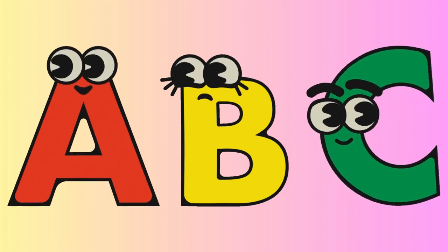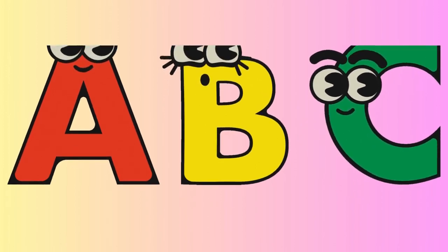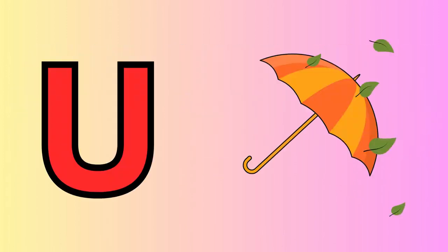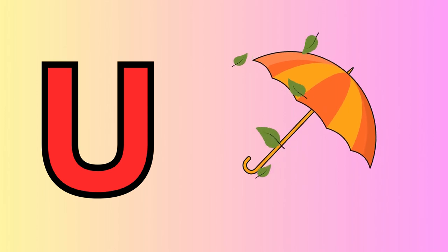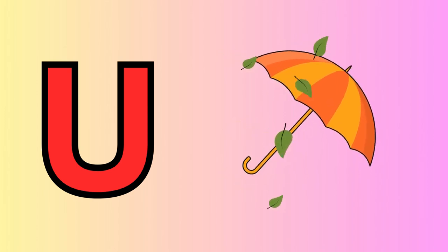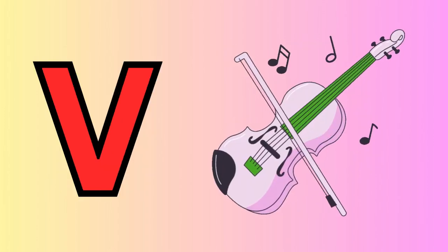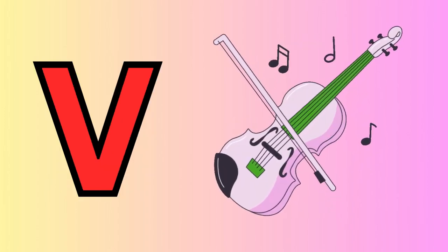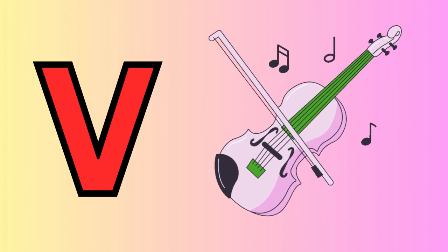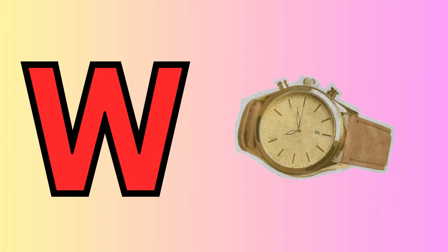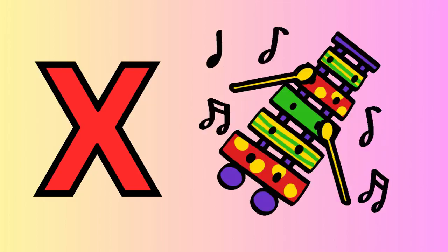U is for umbrella, u-u-umbrella. V is for violin, v-v-violin. W is for watch, w-w-watch. X is for xylophone, x-x-xylophone.